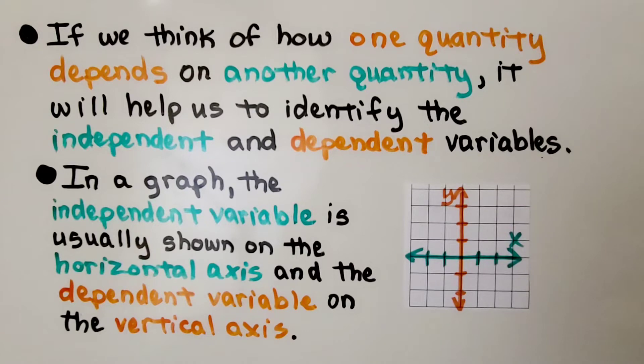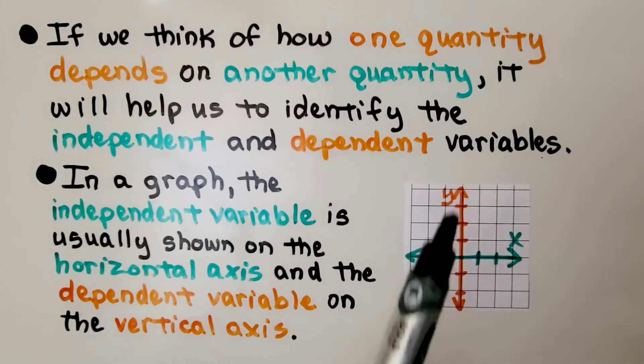In a graph, the independent variable is usually shown on the horizontal axis and the dependent variable on the vertical axis.